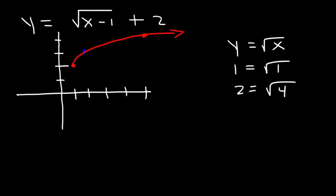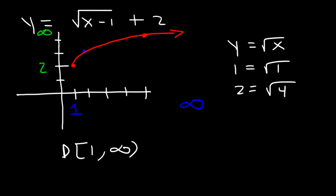What's the domain and range of this graph? The domain relates to x values — the lowest is 1 and the highest is infinity, so the domain is from 1 to infinity, using a bracket since it includes 1. The range relates to y values — the lowest is 2 and the highest is infinity, so the range is from 2 to infinity.